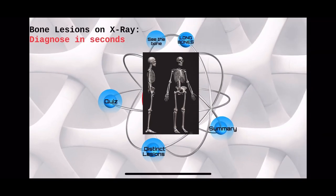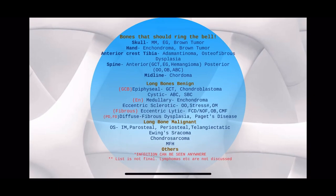This is all you need to know about bone tumors and bone lesions for your exam. For a quick review — bones that should ring the bell: Skull: think of multiple myeloma, eosinophilic granuloma, or brown tumor. Hand: think of enchondroma or brown tumor. Remember the difference. Anterior crest of tibia: adamantinoma or osteofibrous dysplasia.